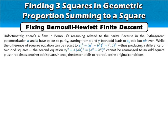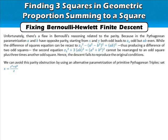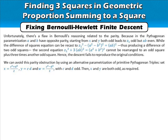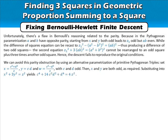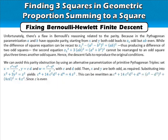We can avoid the parity obstruction by using an alternative parametrization of primitive Pythagorean triples. Set x = (c² + d²)/2, y = cd, and w = (c² - d²)/2, with c and d both odd. Then x and y are both odd, as required. Substituting into x² + 3y² = z² yields c⁴ + 14c²d² + d⁴ = 4z². This can be rewritten as (c² - d²)² + (4cd)² = 4z². Since z is even, we deduce c² - d² is divisible by 4.